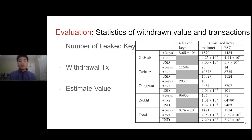We present the number of leaked keys, the withdrawal transactions, and the estimated values in the table. In total, we find US$7.88 million worth of assets on the Ethereum mainnet and BSC are withdrawn from 1,514 leaked secret keys.